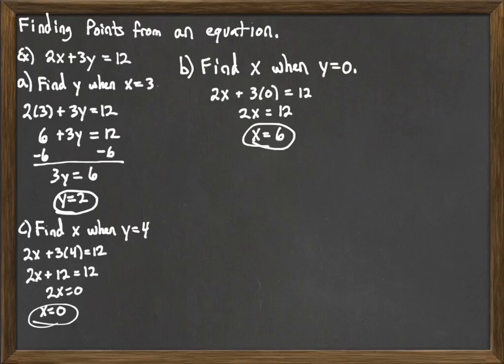So at this point, we've found three different solutions for this equation. The first example, x was 3, y was 2. So 3 comma 2. x was 6, y was 0 in the second one. And then x is 0, y is 4 here in the third one. We're going to continue in another video where we're going to find a couple more points. And then we're going to actually look at graphing those points.